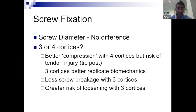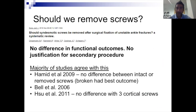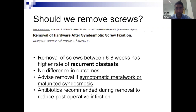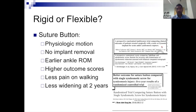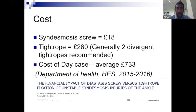For syndesmosis screws, the jury is still out on three versus four cortices — there's no difference. Screw diameter makes no difference. Two screws are generally thought to be better. Two centimeters above the joint line gives less widening. Regarding screw removal — probably not justified; there's no justification for a secondary procedure and the outcomes support leaving them in. If they're symptomatic, then remove them. As for whether to use a tightrope or screws: tightropes have been shown to have better movement, less implant removal rates, better range of ankle movement, higher outcome scores, less widening at two years, and higher return to work rates.